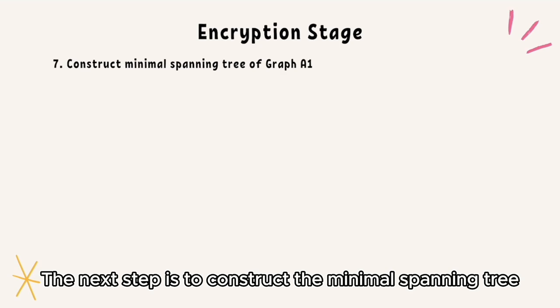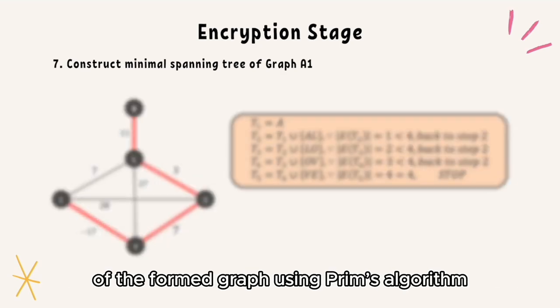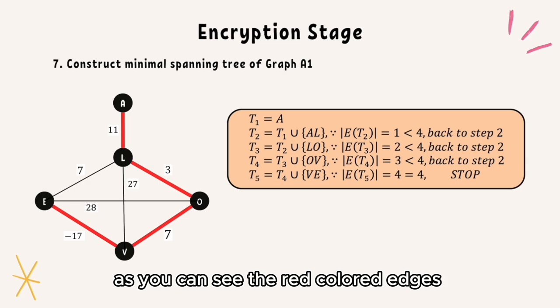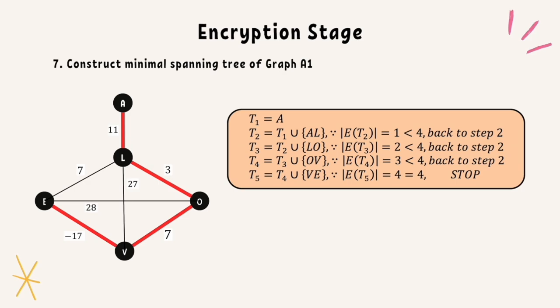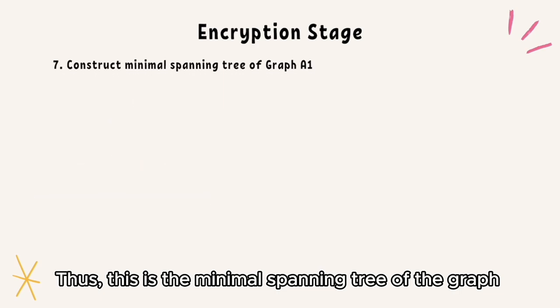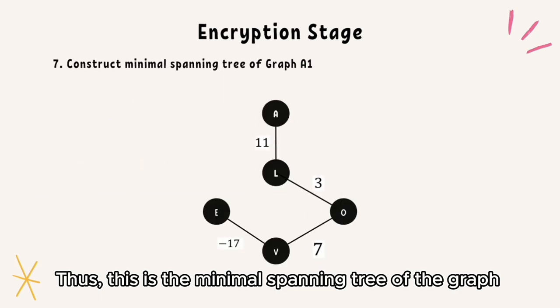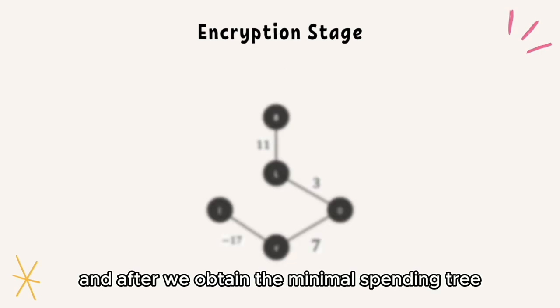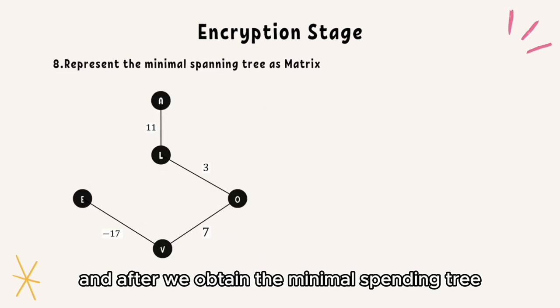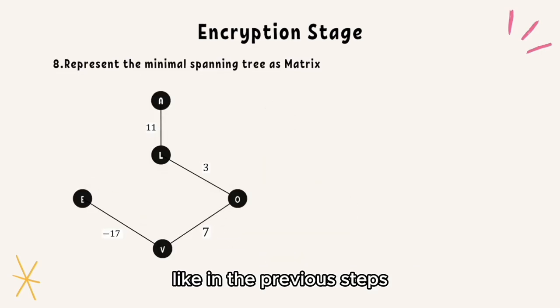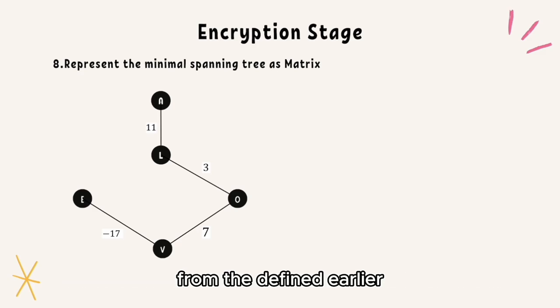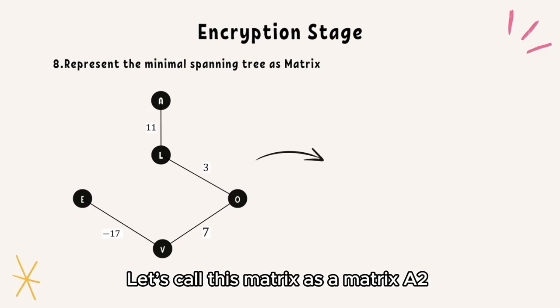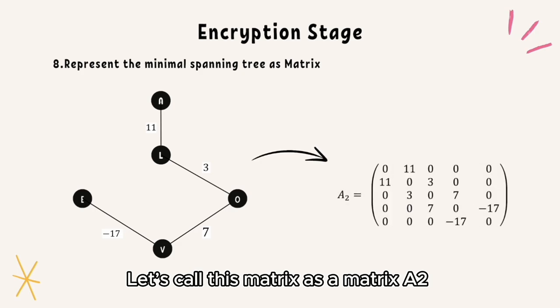The next step is to construct a minimal spanning tree of the graph using Prim's algorithm. As you can see, the red-colored edges form the tree with minimal total weight. Thus, this is our minimal spanning tree of the graph. After obtaining the minimal spanning tree, like in the previous steps, we convert this minimal spanning tree into matrix form as defined earlier. Let's call this matrix S and matrix A2.